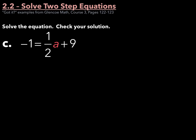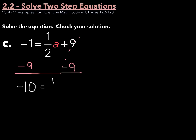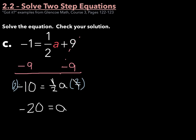Example C reads: negative 1 equals one-half a plus 9. Our variable a is on the right side of the equation. The first thing we want to do is move this plus 9 — the opposite of addition is subtraction. So if I subtract 9 from both sides, this cancels out, and negative 1 minus 9 is negative 10, which equals one-half a. Since I have one-half, I multiply by the reciprocal, which is 2 over 1, on both sides. So 2 times negative 10 is negative 20, and the one-half and 2 over 1 cancel out, so negative 20 should equal a.